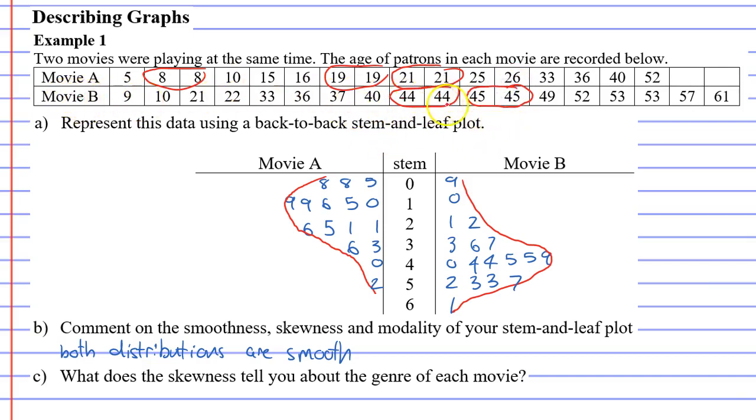When you look at movie B, you might argue that's bimodal because it has two modes, and movie A has several modes, so you might say it's multiple. But when you read the question, it's asking you to state the modality of your plot, not the modality of the data. When you look at the plot, there's only one peak on each. So we're just going to say the plot, or the stem-and-leaf plot, is unimodal. It only has one peak.